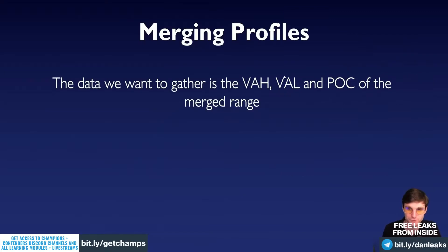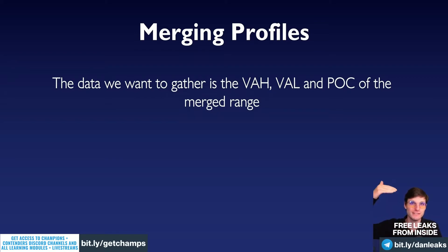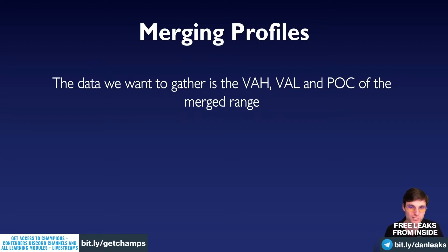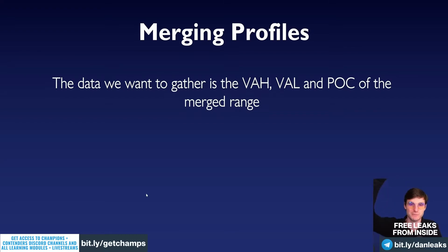I've got some more examples coming up. So the data we want to gather is obviously the value area high, value area low, and point of control of the merged ranges when price is in a range. If you are trending and the day is going up consecutively, I wouldn't merge profiles together. Merging profiles is a lot better when you are in a range — it doesn't really have as much impact in a trending market. Merging profiles is much better within higher timeframe ranges.